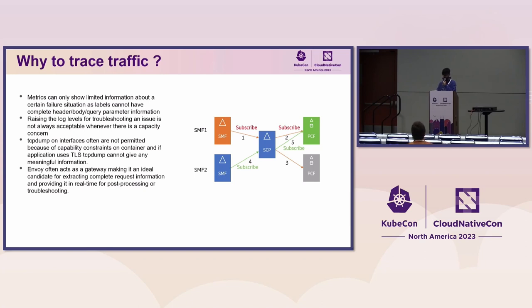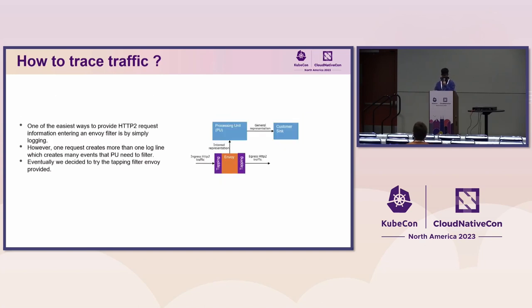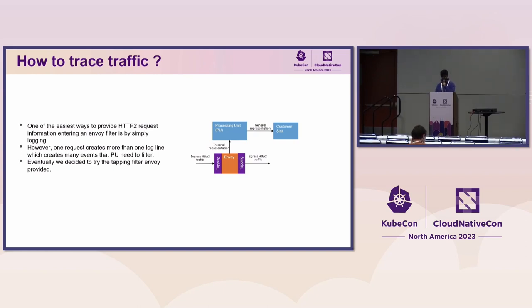The architecture would look like this: we have Envoy sitting in the ingress traffic path, providing some representation of the current traffic it is proxying to an external processing unit. That external processing unit can then do post-processing and produce a general representation like PCAP or PCAP-NG, which customers can use for analytics or troubleshooting.